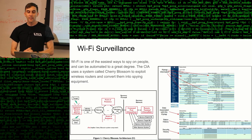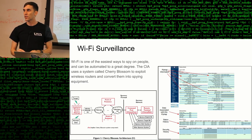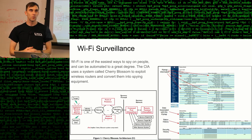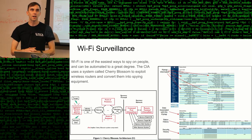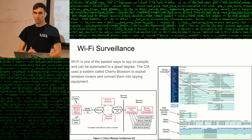Wi-Fi surveillance is a really excellent way of gathering information about people, the devices they use, and human behavior. The CIA knows this — so they operated a program called Cherry Blossom.